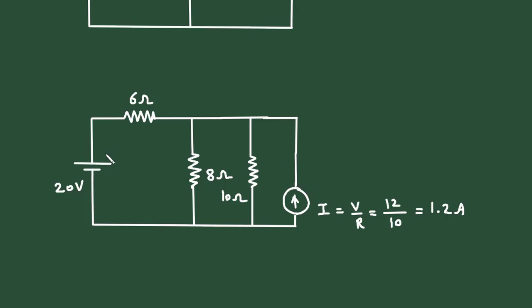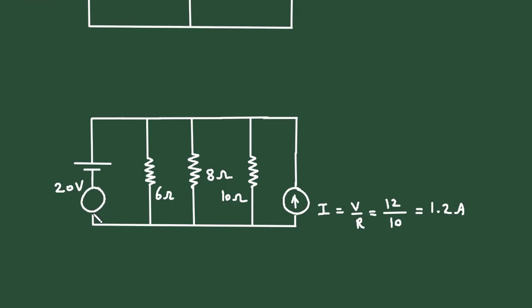Now we can also convert this voltage source to a current source. Here this 6 ohm is connected in series, so it will be in parallel — 6 ohm. This voltage source will become a current source. Again, the direction of this current source will be according to the polarity of this voltage source, that is upward. I is equal to V by R: the value of voltage is 20 and the value of resistance is 6, so it will be 20 divided by 6 ampere — because it is a current source. Now we can erase this.